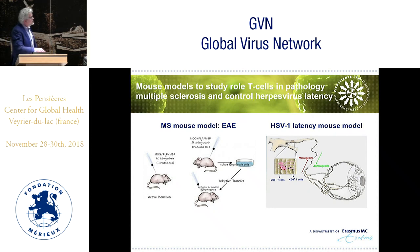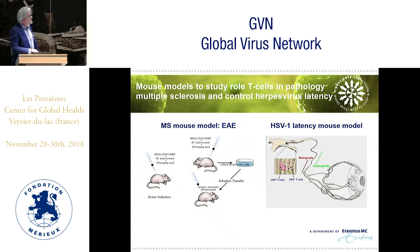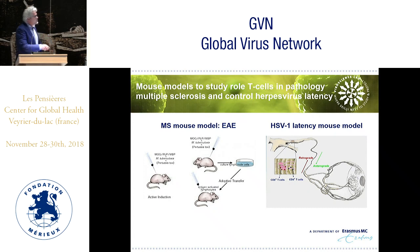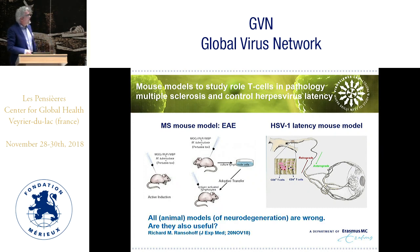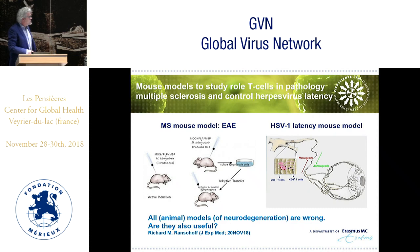Within the trigeminal ganglia of mice inoculated via the corneal surface with HSV1, CD4 and CD8 cells are involved in blocking reactivation. The MS mouse model uses autoantigens. But the real question is: if we look at human diseases and develop mouse models, especially in neurodegenerative diseases, are they wrong, are they useful, and what can we do with them?